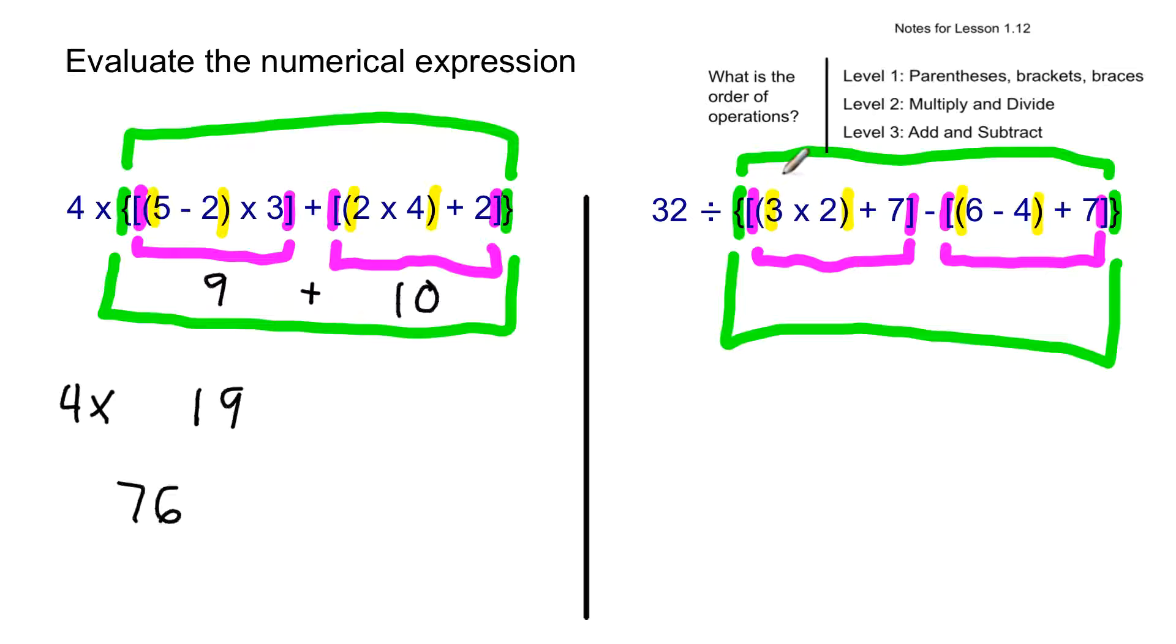Let's solve the first pink group. It's 3 times 2, which is 6 plus 7 is 13. And that's a subtraction symbol minus 6 minus 4 is, let's see, 6 minus 4 is 2 plus 7 is 9.